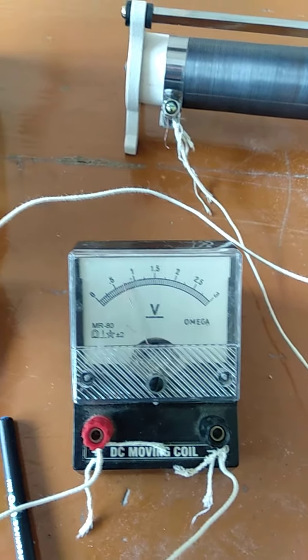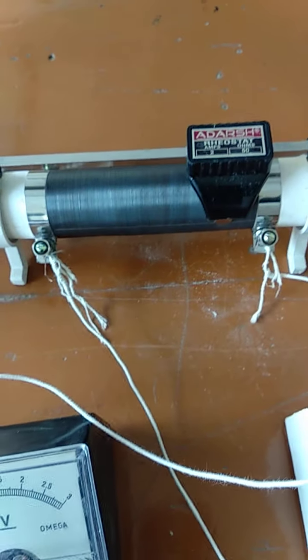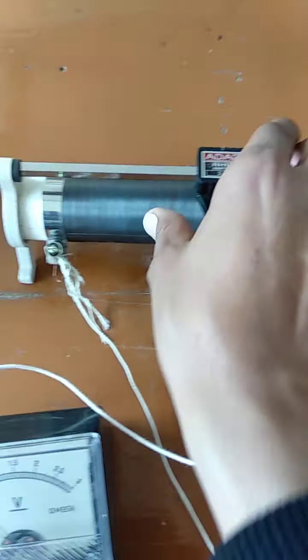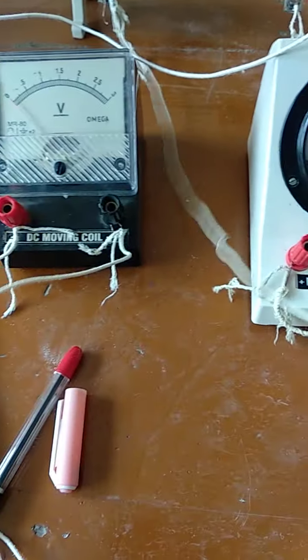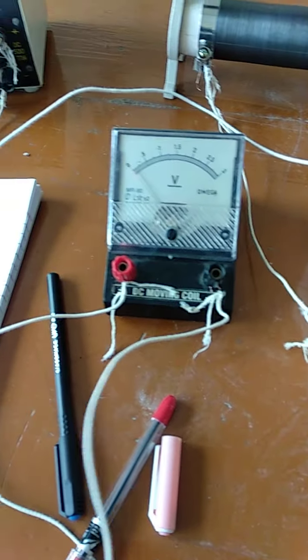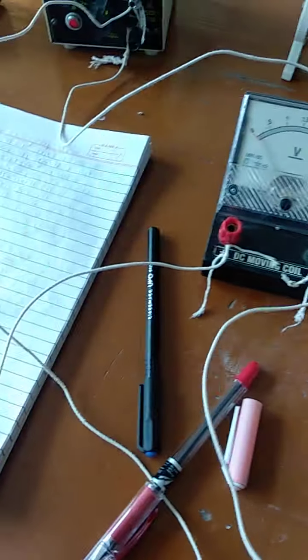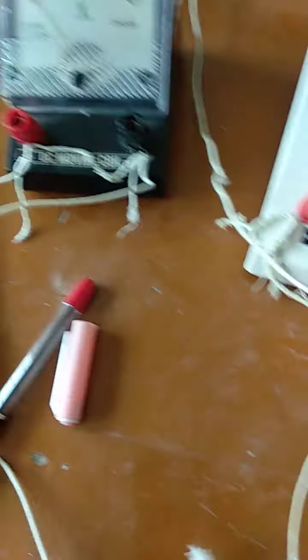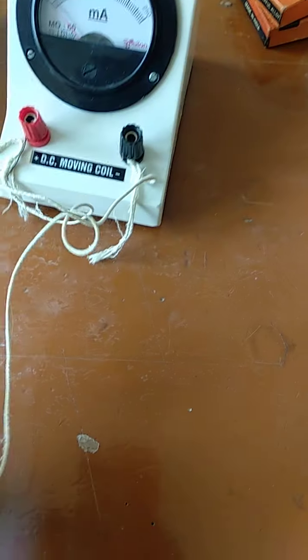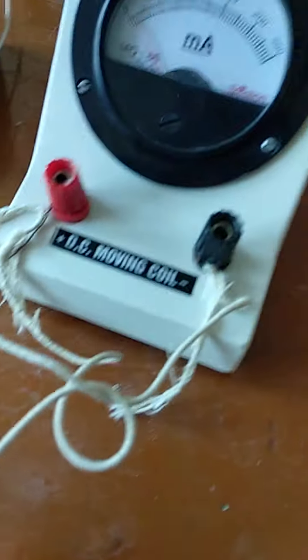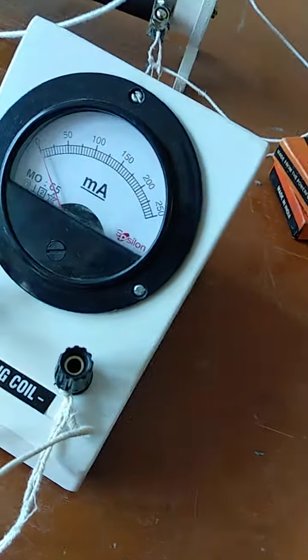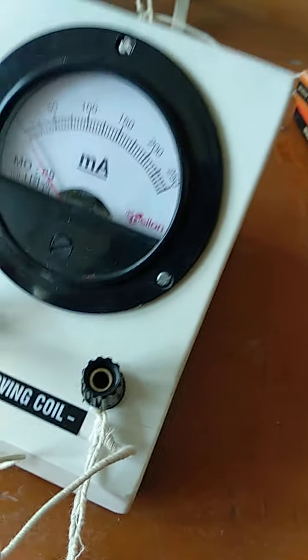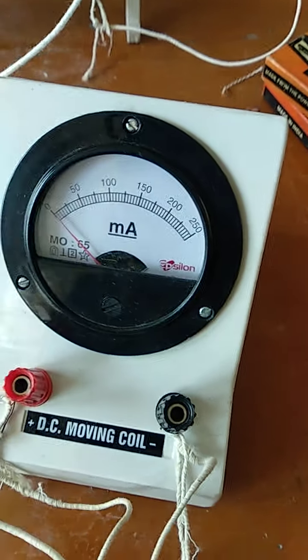It means there is somewhere leakage of the current, leakage of the potential difference. You can see here also. This is rheostat. Somewhere when connections are not proper, then what will happen? When connections are not proper, then it will not give us the proper result. That we need to understand.